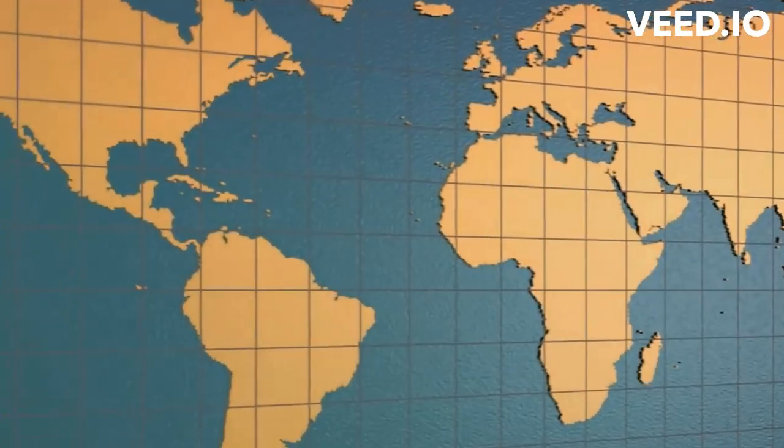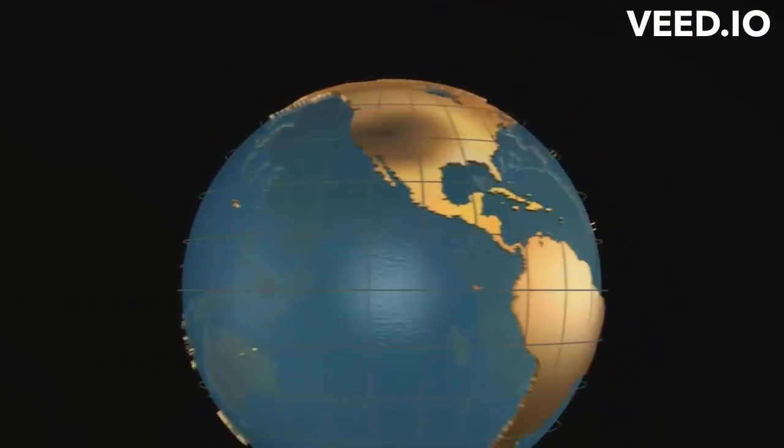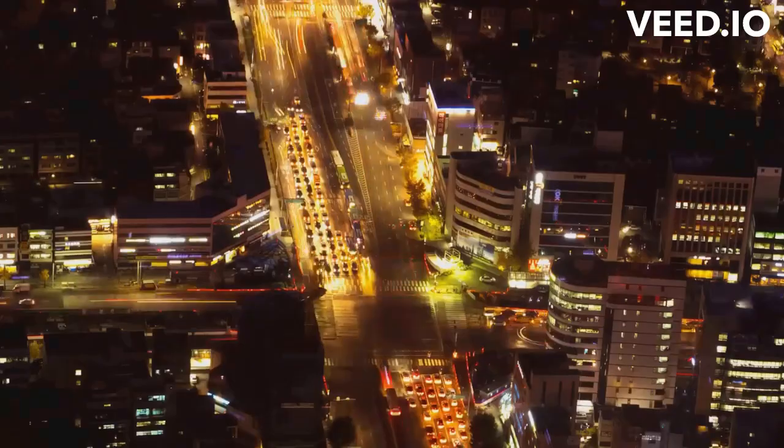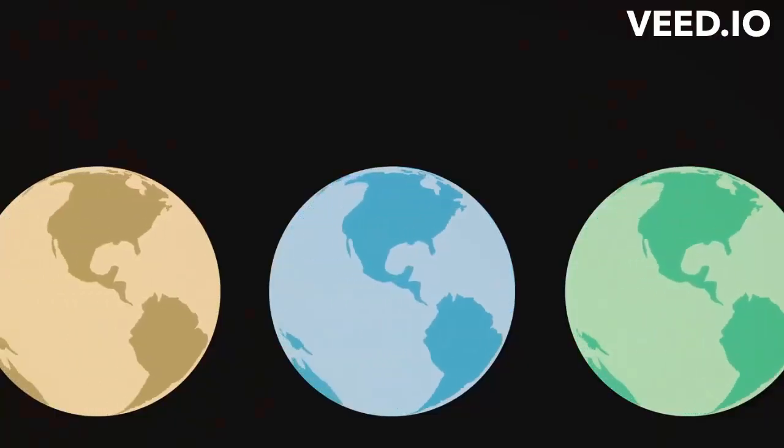Now, to put things into perspective, our Earth spins at a speed of approximately 1,670 kilometers per hour at the equator. This rotation plays a pivotal role in shaping our daily lives.